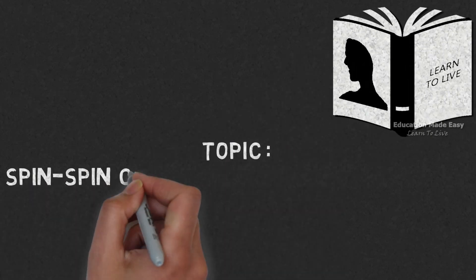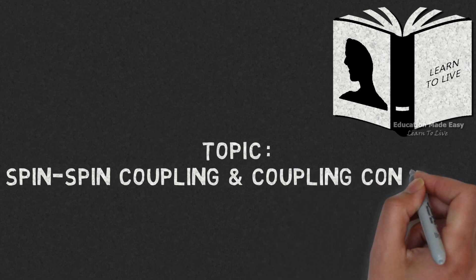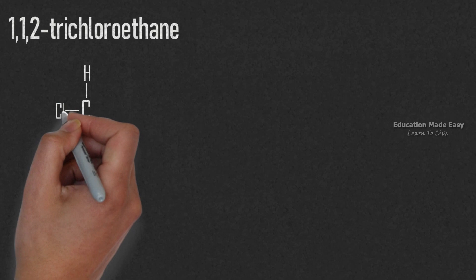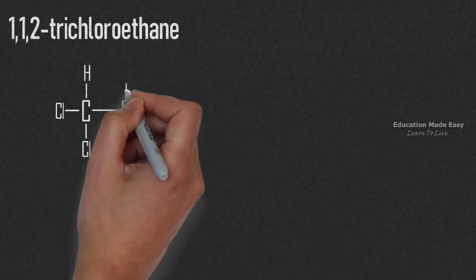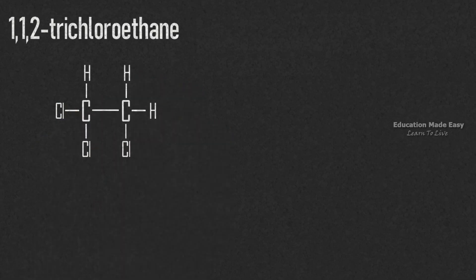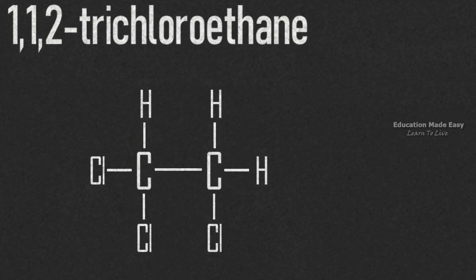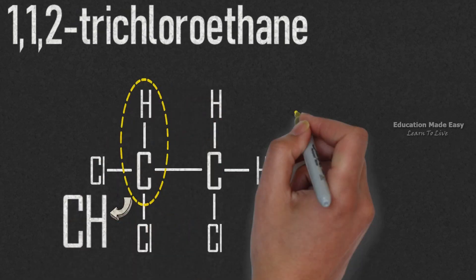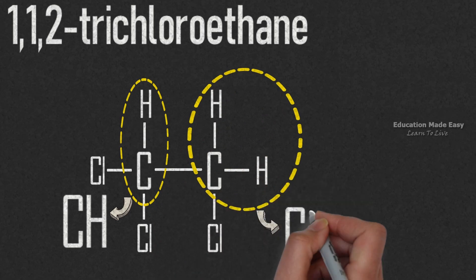Welcome to Learn to Live. This video is based on the topic spin-spin coupling and coupling constant. Let us consider the molecule 1,1,2-trichloroethane. The structure of 1,1,2-trichloroethane is like this. We can see there are two proton groups: the first one is CH proton, the second one is CH2 proton.